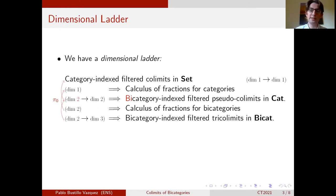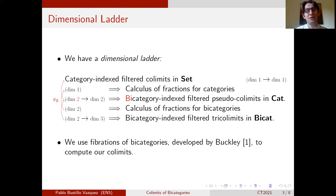So in order to establish all those results, we need some sort of formula to deal with colimits in higher dimension. So to establish this formula, we study Buckley's theory of fibrations of bicategories.